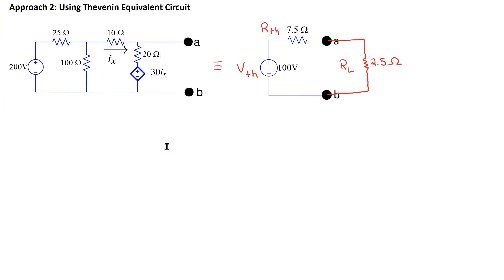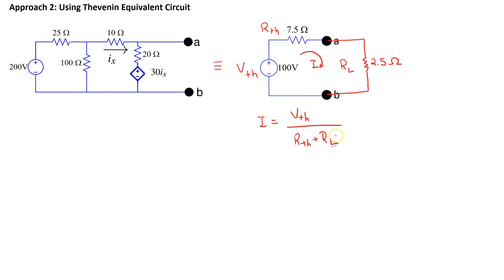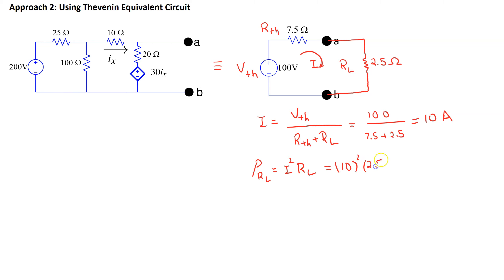Next, let's see how we can use the Thevenin equivalent circuit to find the power dissipated in the load resistor. This is the Thevenin equivalent circuit with RL connected. It is a single loop circuit with a single voltage source and two resistors. The current I = VTH / (RTH + RL). Substituting the values, the power dissipated in the load resistor is I²·RL, which gives 250 watts — the same answer as before.